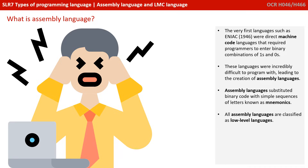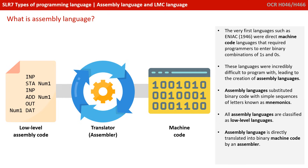Assembly languages substituted the binary codes with simple sequences of letters known as mnemonics. All assembly languages are classified as low-level languages. The assembly language is directly translated into binary machine code by a translator known as an assembler.